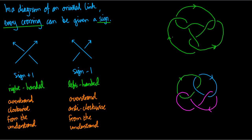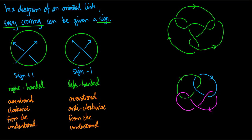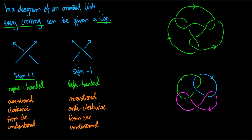How does it work? It turns out that in an oriented link diagram, every crossing has one of two forms: either the form on the left, or the form on the right. In the first case — the case on the left — we say that the crossing has sign plus one. In the case on the right, we say it has sign minus one. The crossing of sign plus one is called right-handed, and the crossing of sign minus one is called left-handed.